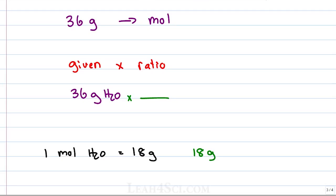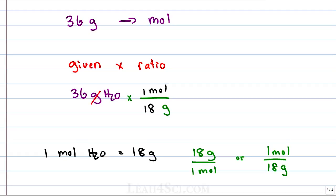We can write the ratio two ways: 18 grams over 1 mole, or 1 mole over 18 grams. Which do I use? If my given is in grams, I need grams in the denominator to cancel. The second option — 1 mole over 18 grams — has grams in the denominator, which allows me to cancel out the grams and leaves me with moles. Then we do the math: 36 divided by 18. Since 18 times 2 is 36, that gives us 2 moles of H2O.